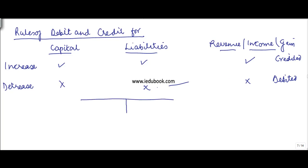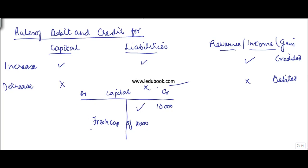If you figure it out in a T-form account — if this is a capital account and there is fresh capital of 10,000, this is the credit side and this is the debit side, so you will credit it because this is an increase. If there is a withdrawal, say 10,000, it is debited.